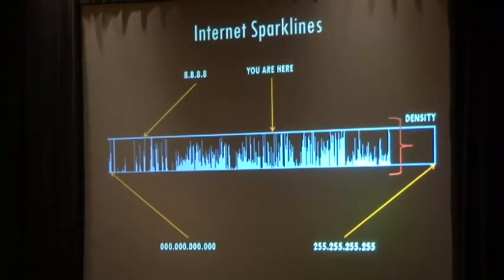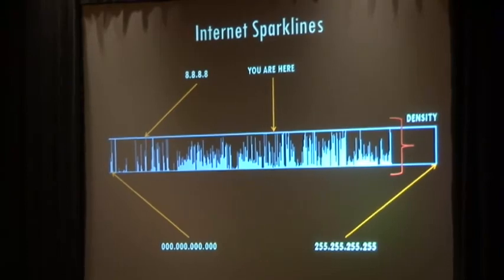One graph I call an 'internet sparkline' lays out the entire IPv4 address space from zero to 4.2 billion as a straight sparkline. The far left is 0.0.0.0 and the far right is 255.255.255.255. The big empty block at the end is reserved space. You can spot Google's DNS server off to the left, and the conference's IP address pops up in the middle. The peaks and valleys represent the density of services per /16.